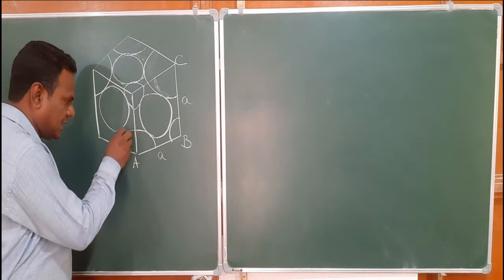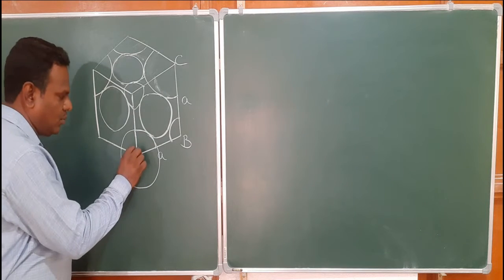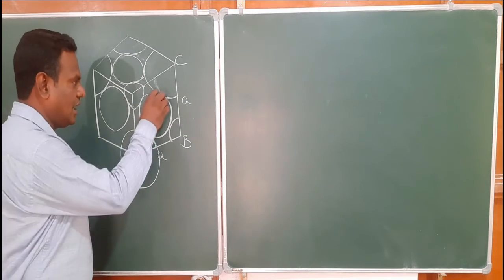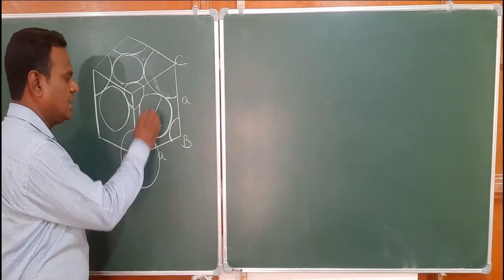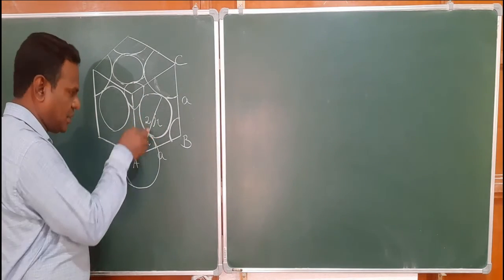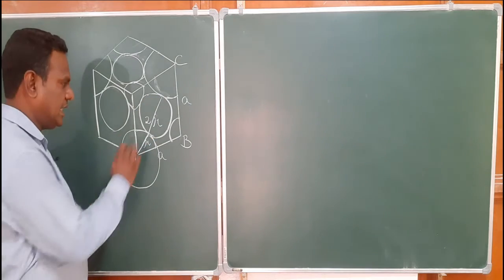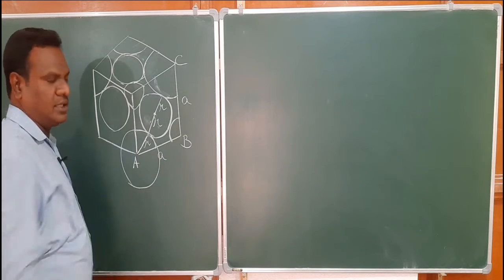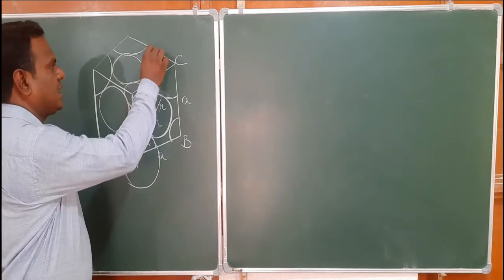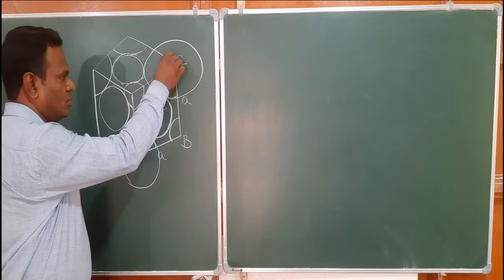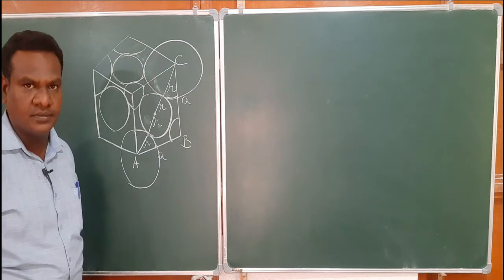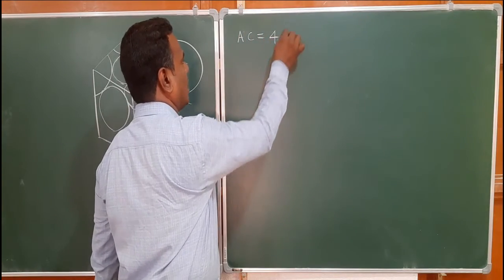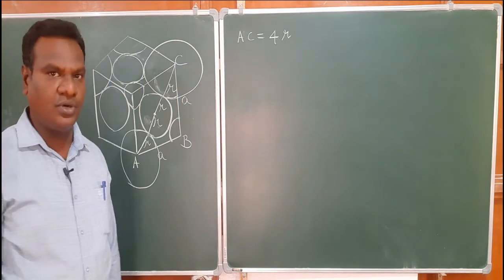This is one sphere at the corner, and this is the face-center sphere. The face-center atom is at the center of the sphere. This is the other sphere at the adjacent corner. The distance AC would be 4R, because along the face diagonal, the corner atom, face-center atom, and the other corner atom are in contact.